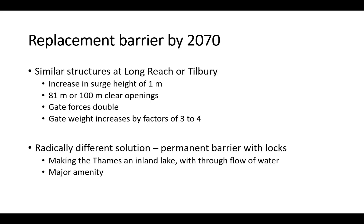By around 2070, the barrier will have to be replaced by something more substantial downstream. The current developing proposal is for a broadly similar structure at Long Reach or Tilbury — about 12 miles further downstream. With a surge height increase of one metre, the gates would need to be bigger: 81 to 100 metre clear openings, meaning forces on the gates double and gate weights increase by three to four times. That's doable — but personally, I'm not sure it's the right solution. I think we should be considering a completely radically different alternative: a permanent barrier with locks — a major lock for seagoing ships and a smaller lock for pleasure traffic — which could make the Thames Estuary an inland lake, a really major amenity for the whole of London.